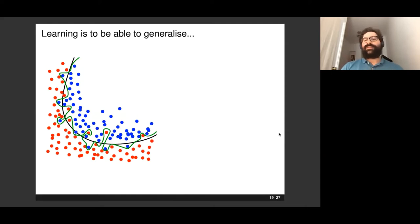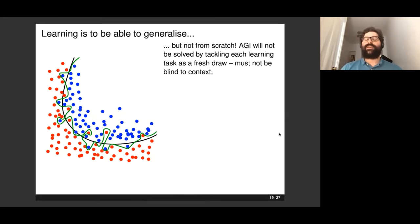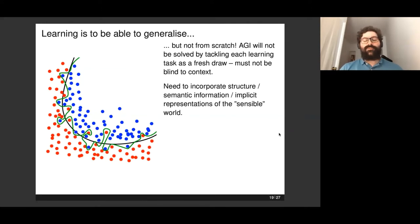So back to my original claim: learning is to be able to generalize, yes, but not from scratch. Certainly not from scratch. You need to acknowledge something profound and subtle, which is the internal representation. We certainly cannot hope to solve artificial general intelligence if we try and solve each learning task as a fresh draw. We must not be blind to the context and representation and previous experience.